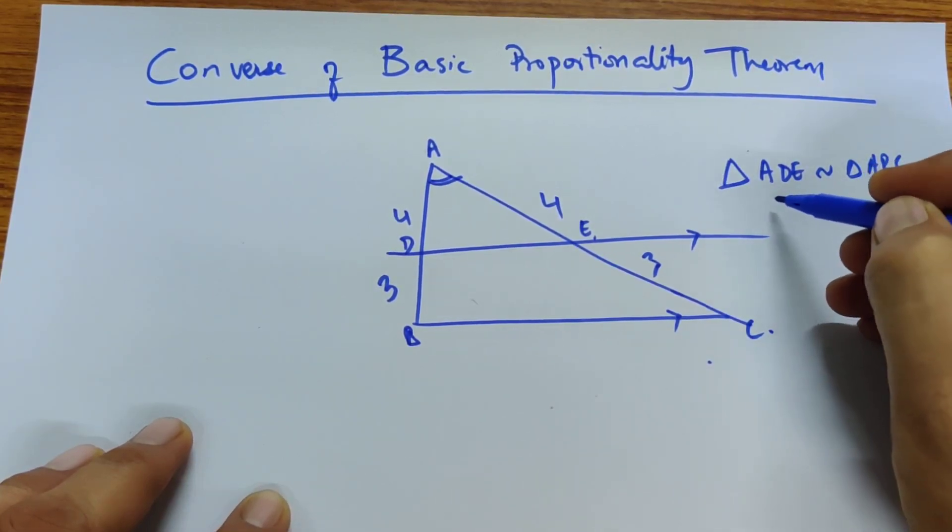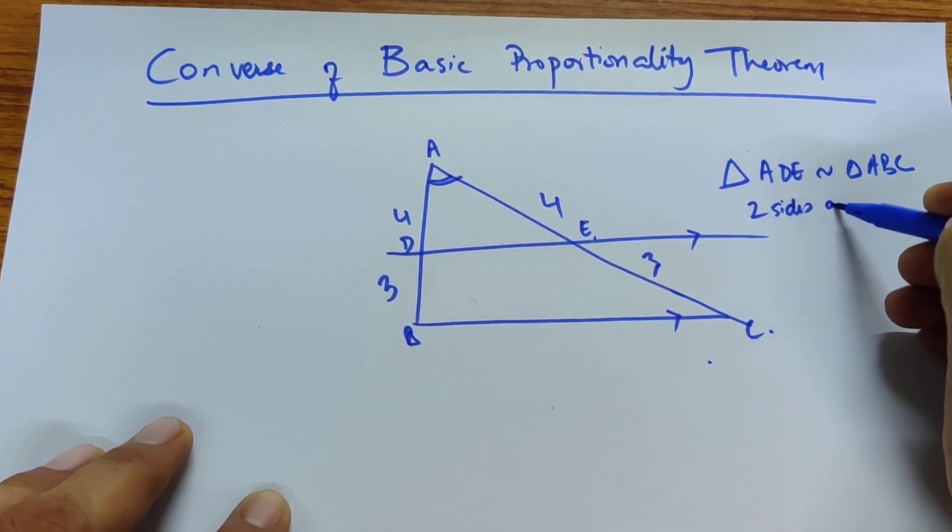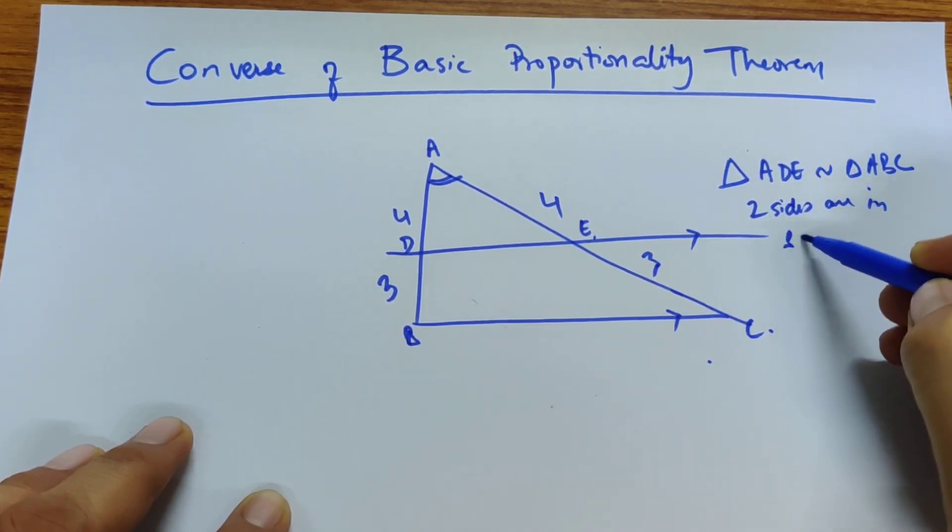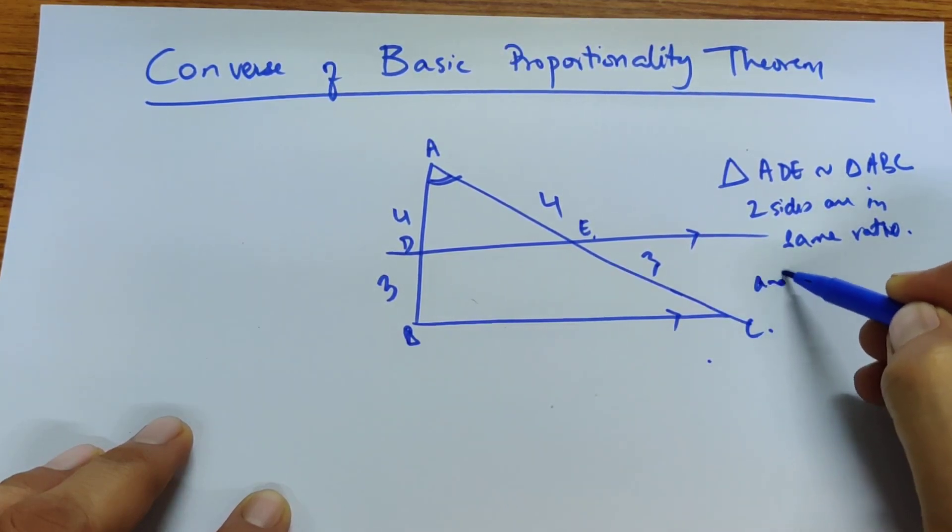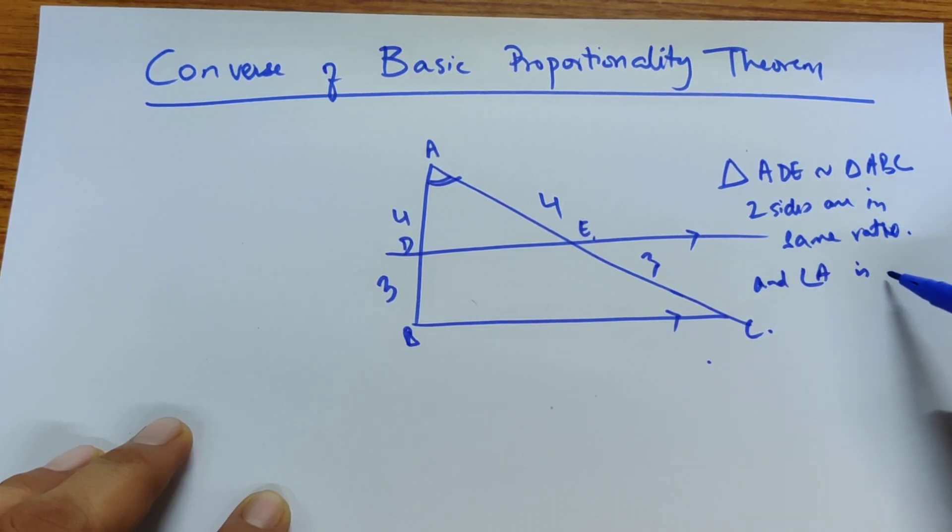Because the sides, two sides, are in same ratio and angle A is same, common.